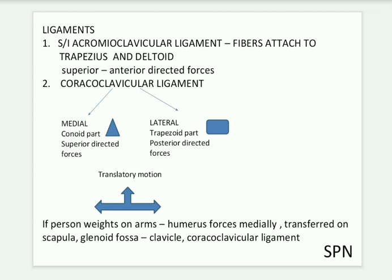The coracoclavicular ligament is divided into two parts: the medial coracoclavicular ligament and the lateral coracoclavicular ligament. The medial coracoclavicular ligament is triangular in shape (the conoid part) with superiorly directed forces, while the lateral coracoclavicular ligament is quadrilateral (the trapezoid part) with posteriorly directed forces. Both ligaments perform translatory motion relative to each other.